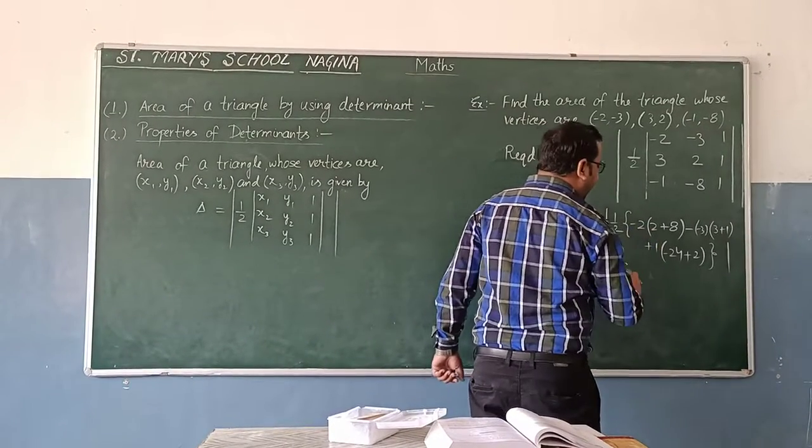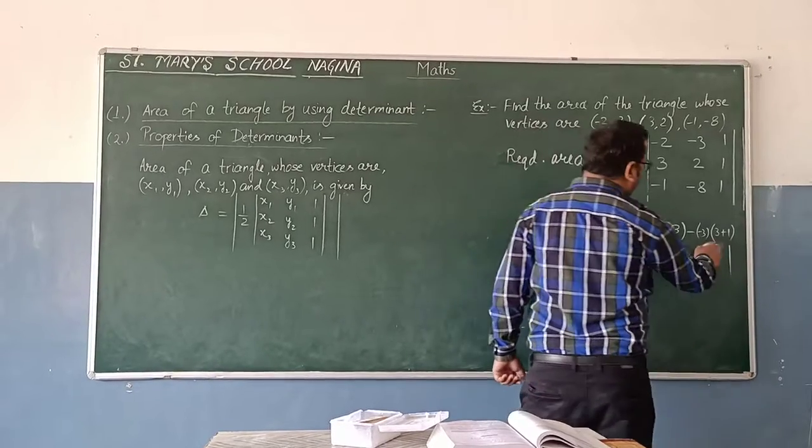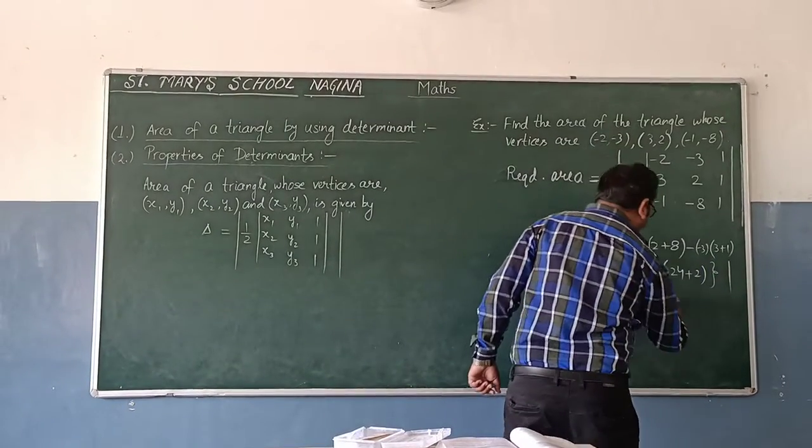10, multiplied by minus 2, minus 22, 4 multiplied by 3, 12, plus 5.